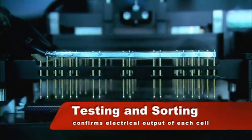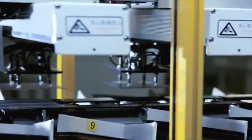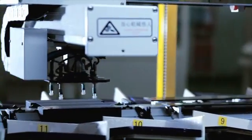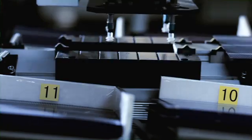The cells then undergo rigorous testing and sorting using a solar simulator. Quality control is performed at every step of the production process, from receiving the incoming wafers to packaging.